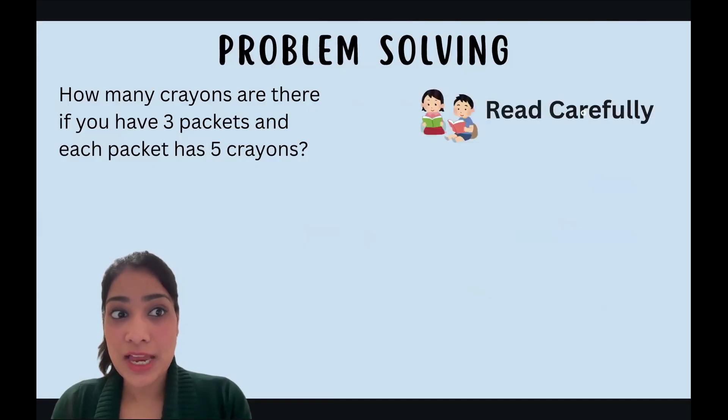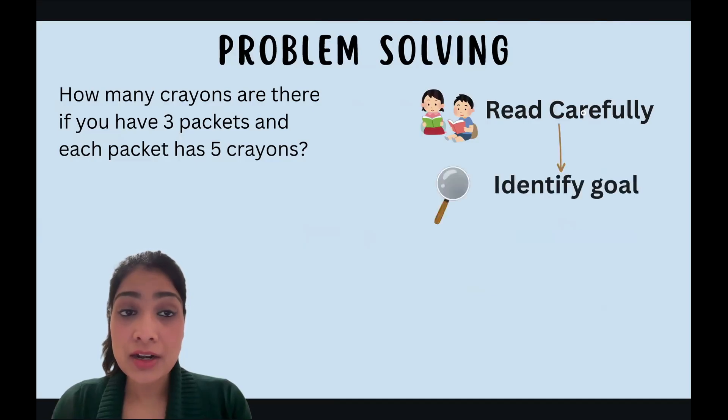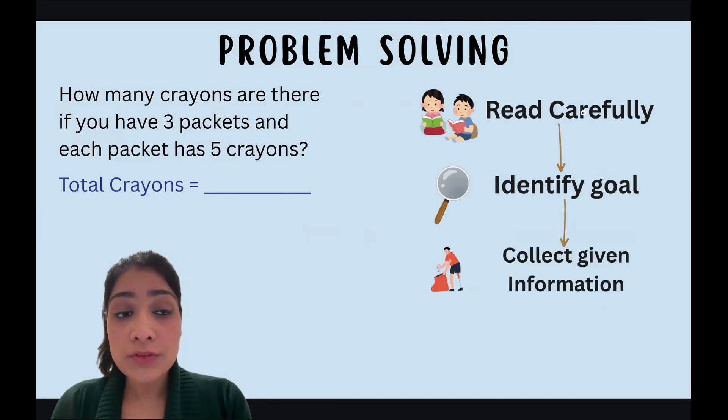Okay, for problem solving or any word problems, our steps are: you first read our problem very carefully. Let's do that. How many crayons are there if you have three packets and each packet has five crayons? Our next step for the word problem is to identify our goal, or what we want to achieve: total number of crayons. And our third step is to collect all the information that is given to us. So what's given to us? We have our packets, how many? Three. And in each packet we have five crayons.